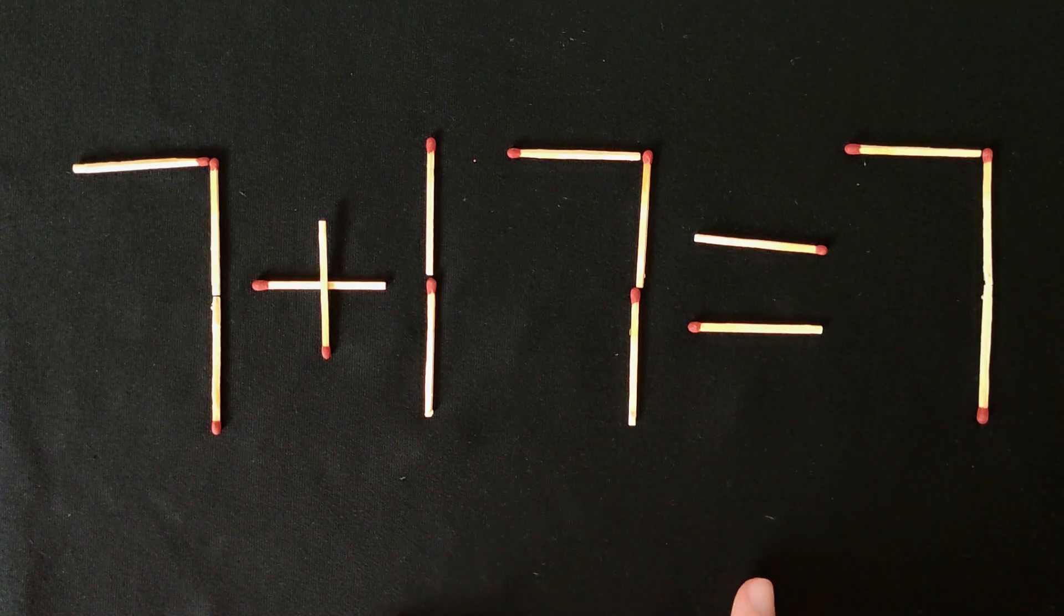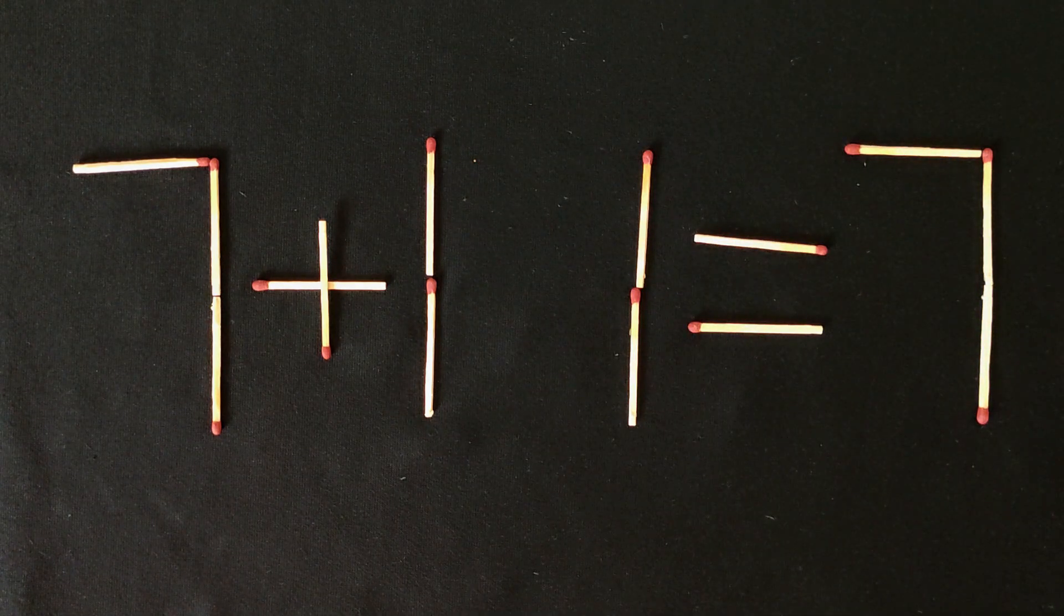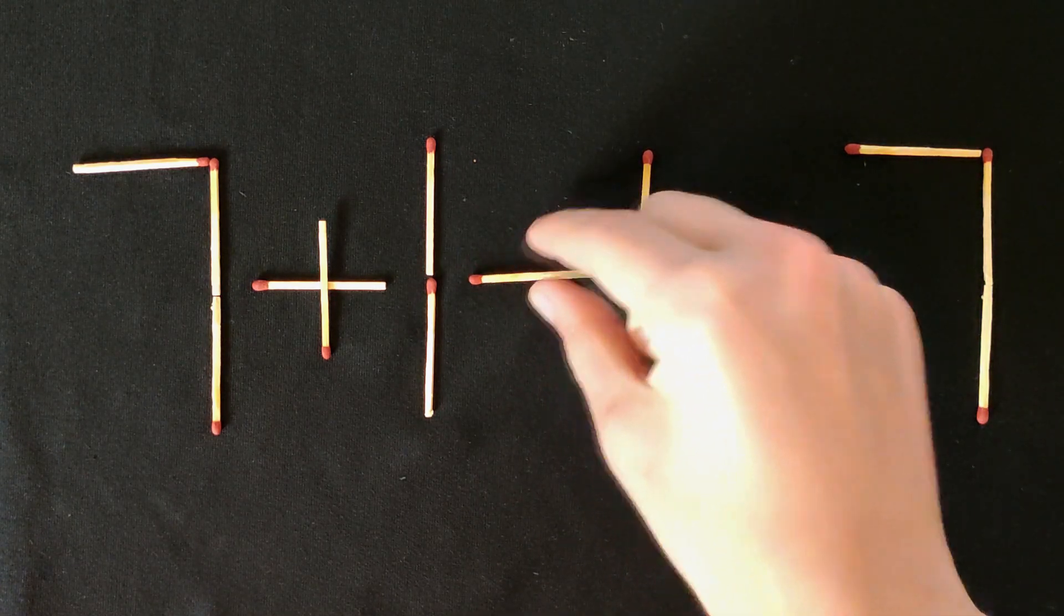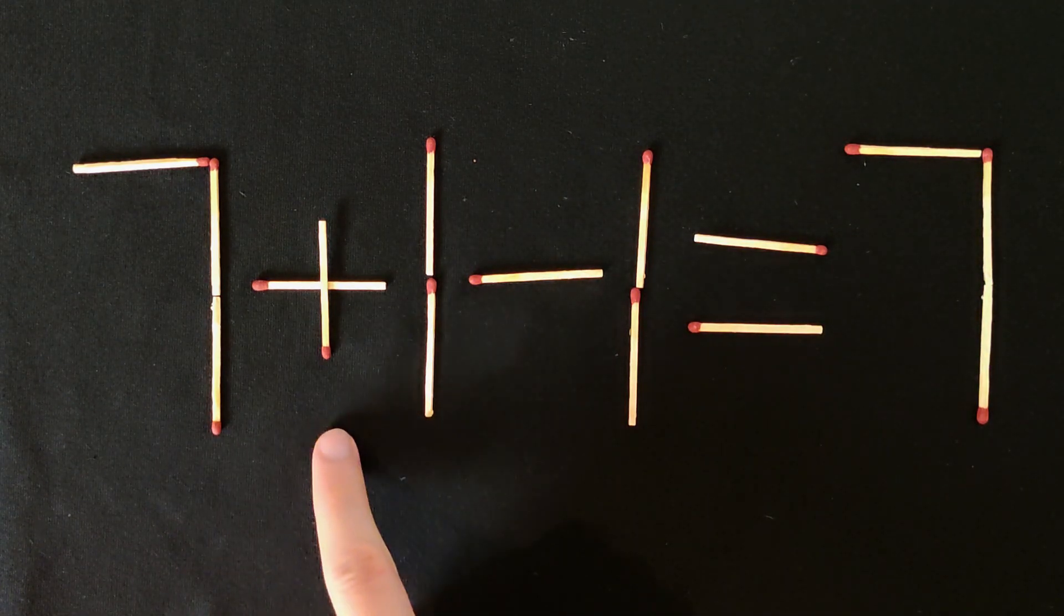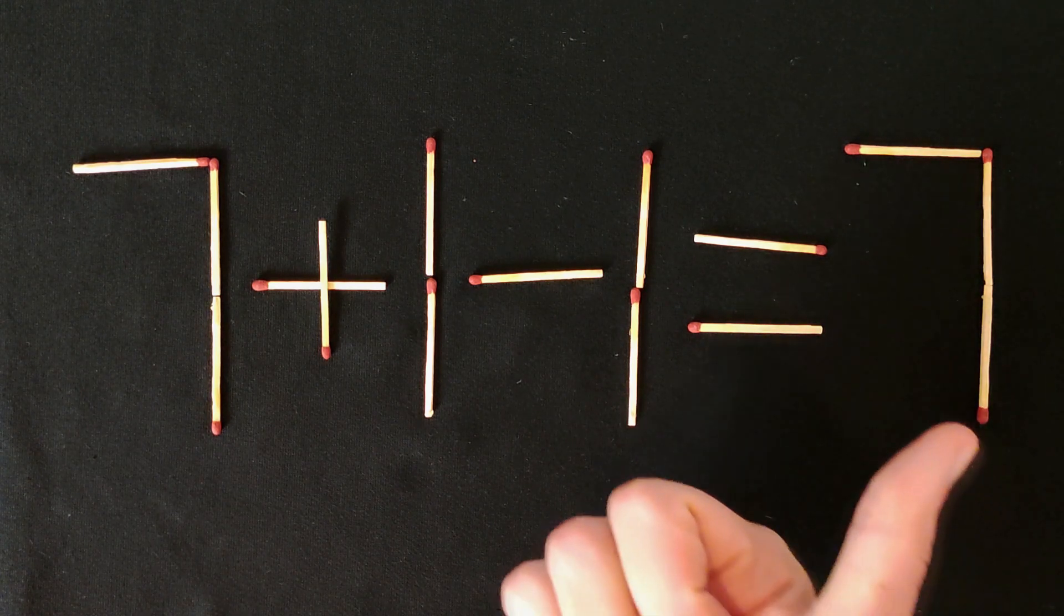And right now I'll show you how it's solved. You need to move this match from here, and put it here. Cool. And now 7 plus 1 minus 1 equals 7. Correct.